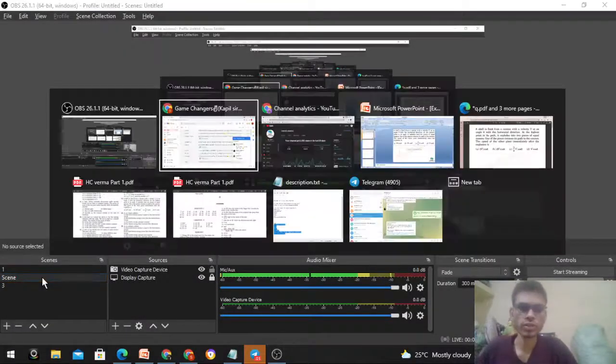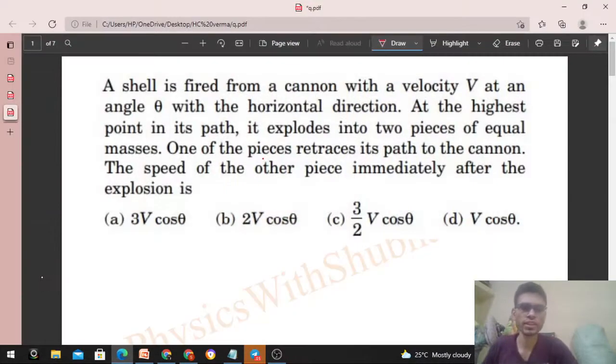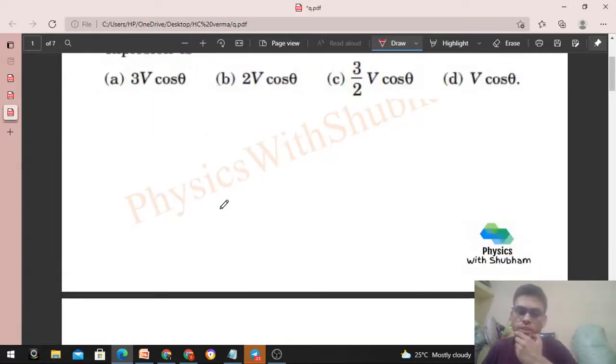Okay, hi everyone. So today let's discuss this interesting problem. It says a shell is fired from a cannon with a velocity V at an angle theta with the horizontal direction. At the highest point in its path, it explodes into two pieces of equal masses. One of the pieces retraces its path to the cannon. The speed of the other piece immediately after the explosion is...